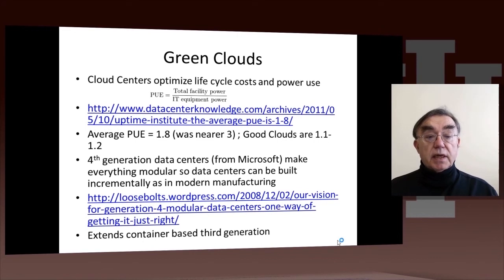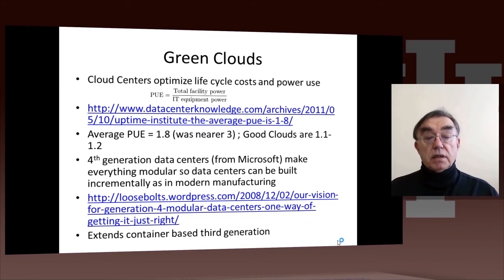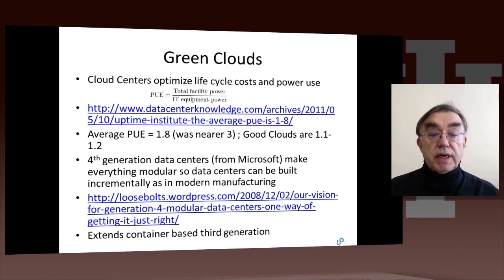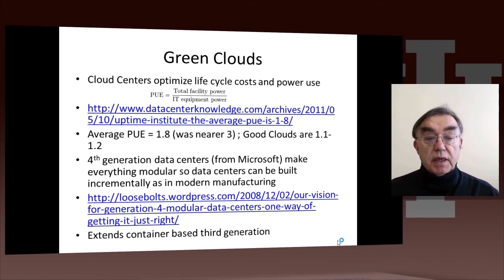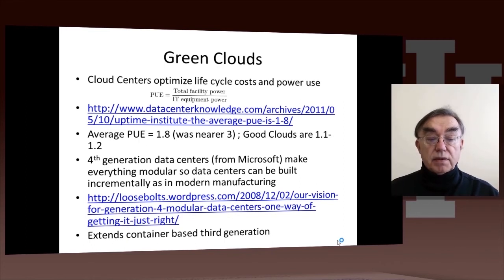Related to this, there are environmental issues. We can both position the cloud in a place that has environmentally friendly and cheap energy, and also design it in a way that is extremely efficient. A measure of efficiency is the so-called PUE — Power Usage Effectiveness — which is the total power used in the facility divided by the power needed to run the computers. Historically this number was around three; the average is now meant to be 1.8 as people have become more efficient, but the best clouds can get that number down to 1.1 to 1.2.